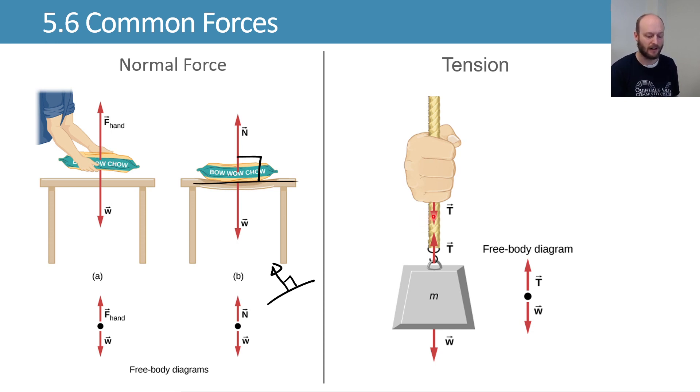Always pulls, and it pulls axially along the direction that that rope is aligned in. So you know the direction along with the line of action, it's along the direction of the rope.